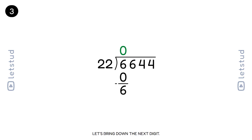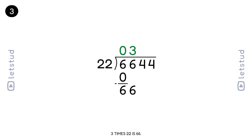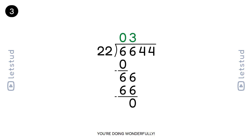Let's bring down the next digit. We have a remainder of 6 and bring down the 6 to make 66. 22 fits into 66 three times. 3 times 22 is 66. 66 minus 66 is 0. You're doing wonderfully.